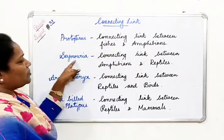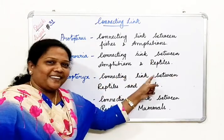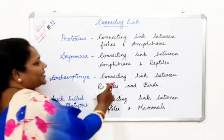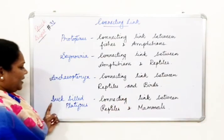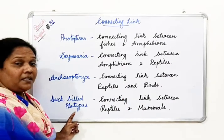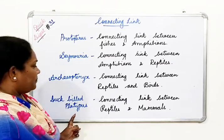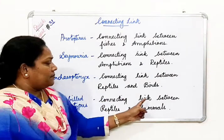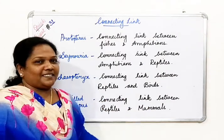Next is Seymoria, the connecting link between amphibians and reptiles. Archaeopteryx is the connecting link between reptiles and birds. And the duck-billed platypus — which is a mammal and notably an egg-laying mammal — is the connecting link between reptiles and mammals. Thank you.